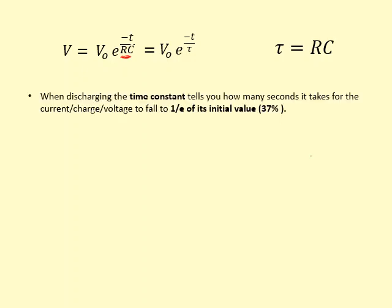Now the time constant is defined as the time it takes for the charge or voltage to decrease to 1 over E, which is 37% of the initial value. So why is this? Because if at the top, instead of time, if you have RC over RC, that becomes E to the power of minus 1.